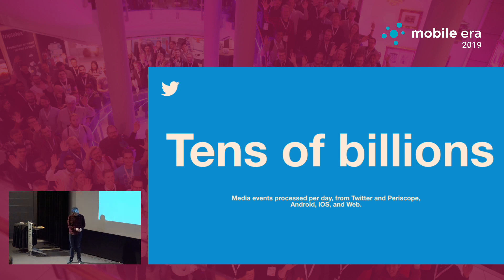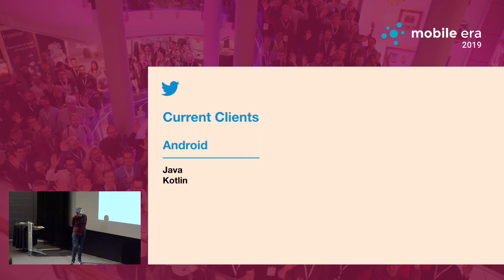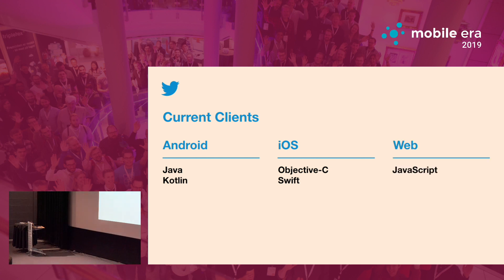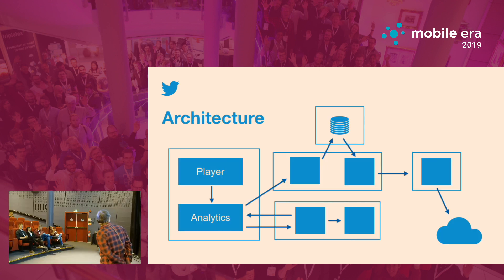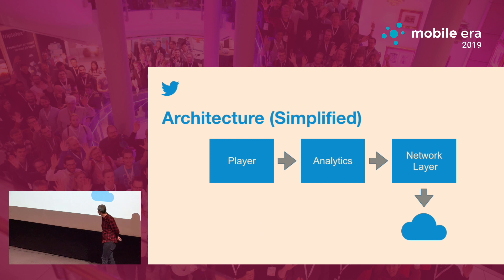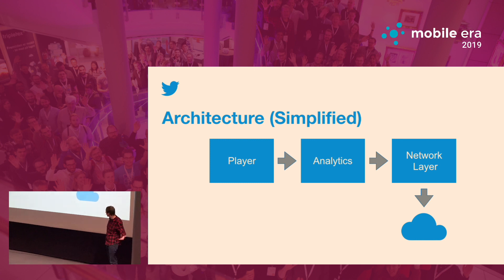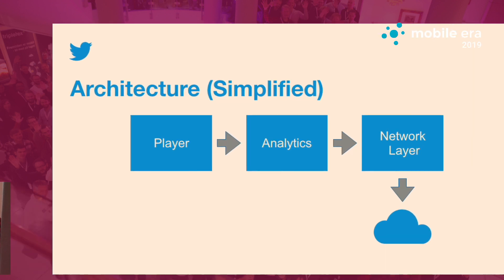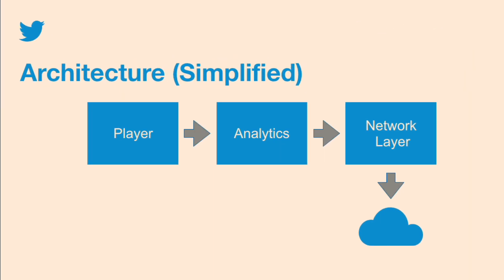Currently, our clients are exactly as you'd expect: Android has Java and Kotlin, iOS has Objective-C and Swift, and web is obviously JavaScript. Our architecture simplified: the player sends us tick events — every frame of the video sends us an update so we can see if we need to fire any events. If we need to fire an event, we send it to our network layer, which then sends it to our backend where we aggregate and anonymize it.